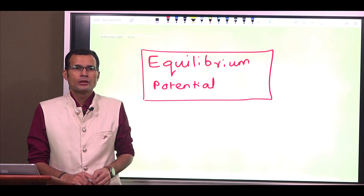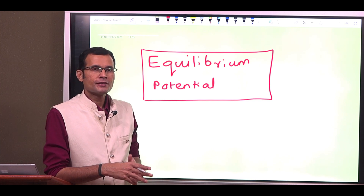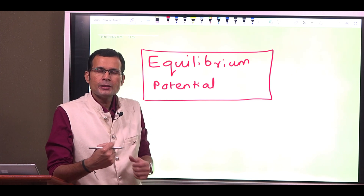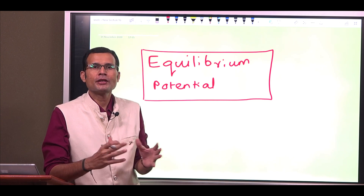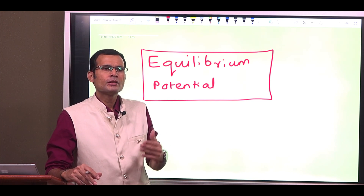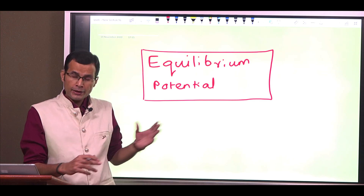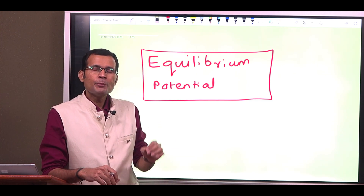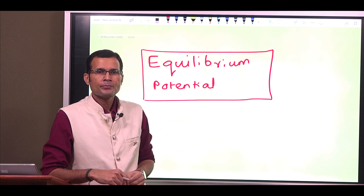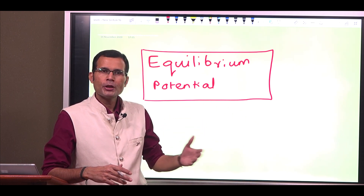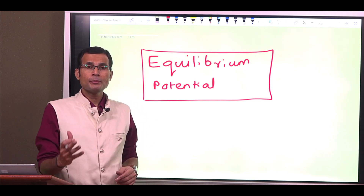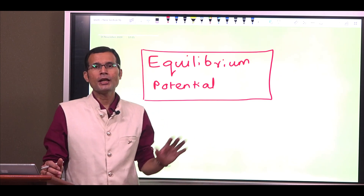This video is about a topic which is feared by many students of physiology. The reason being that it involves a lot of conceptual understanding — the equilibrium potential. There have been some questions in the past in various entrance exams related to this topic. For instance, equilibrium potential for which ion is closest to the RMP of a muscle? The options are sodium, potassium, calcium, chloride. RMP of a muscle is about minus 90 millivolts.